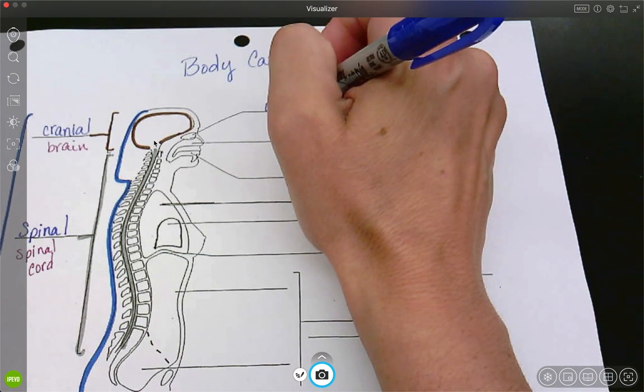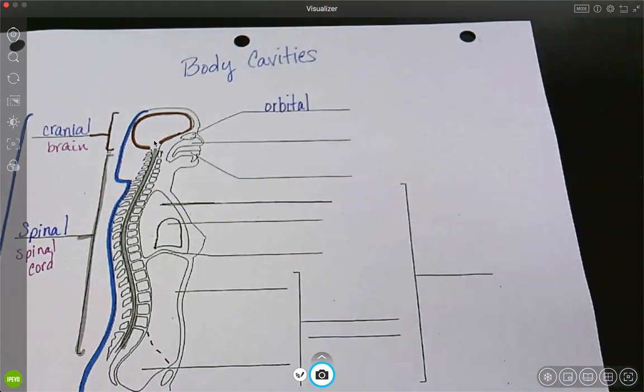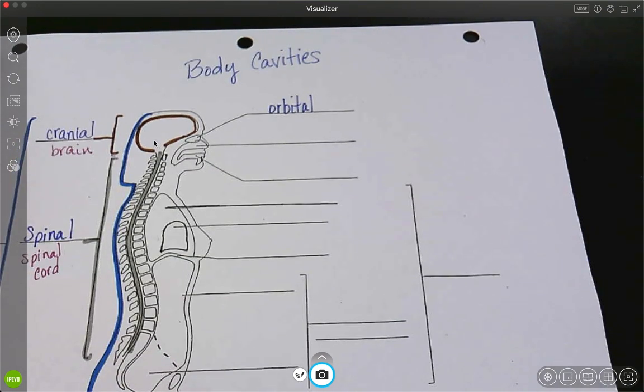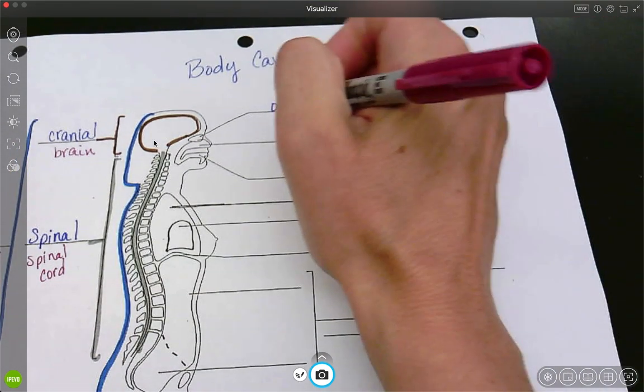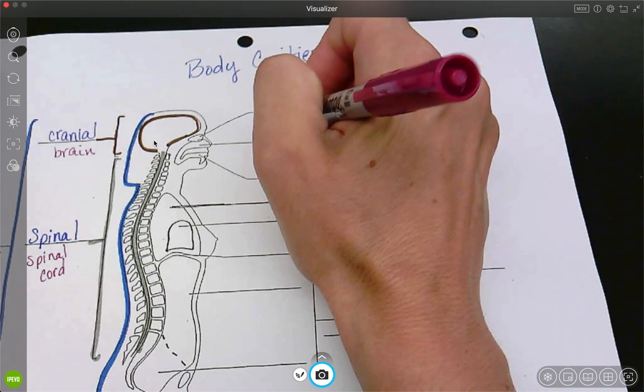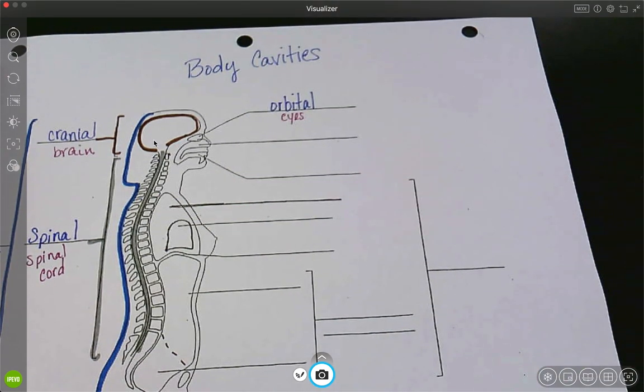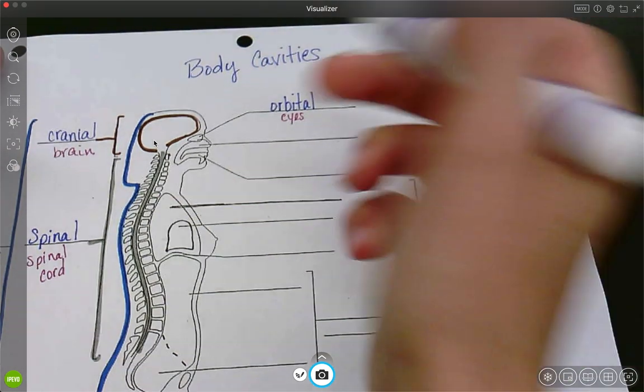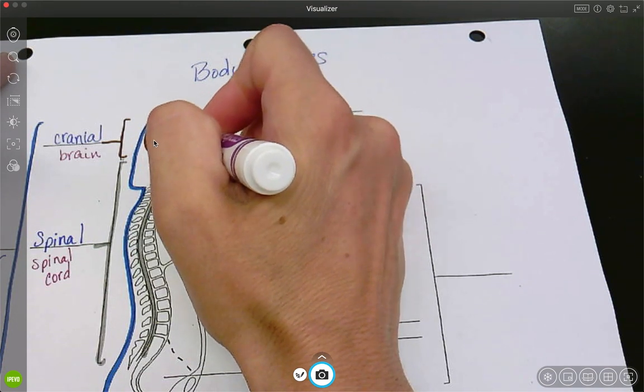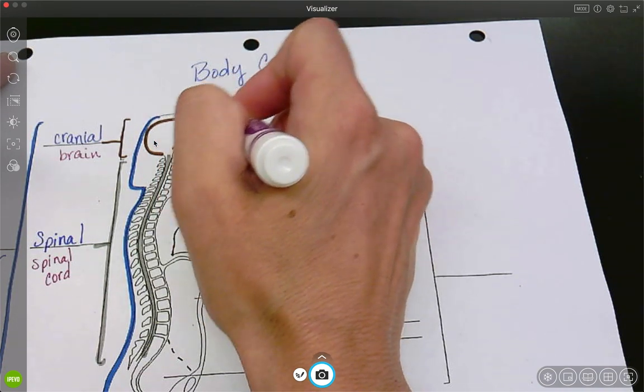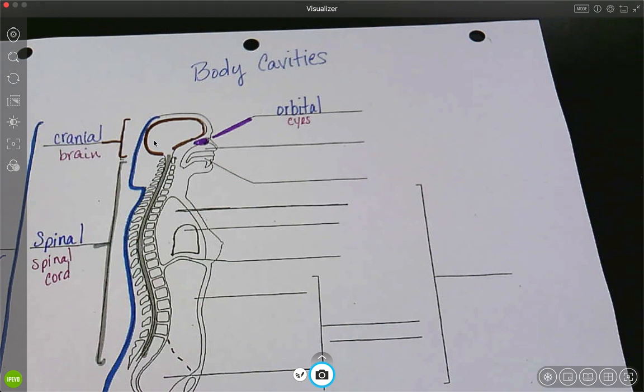And it is the orbital. And inside the orbital it contains the eyes. So let's color that in. Okay.